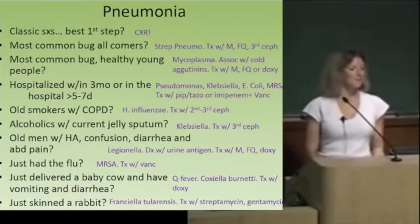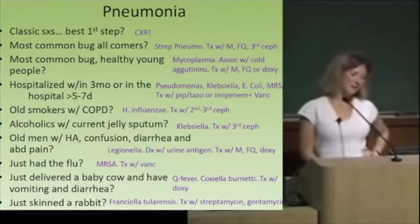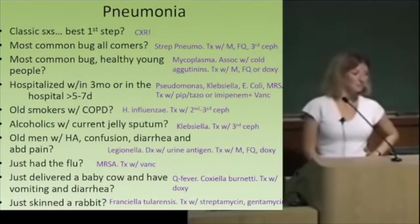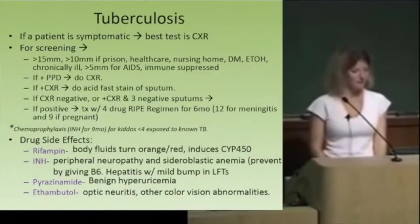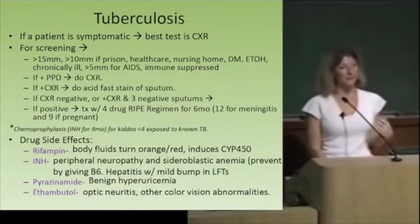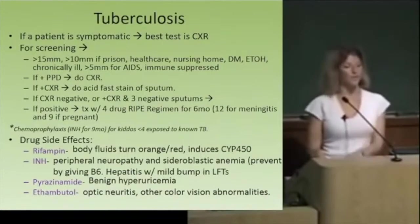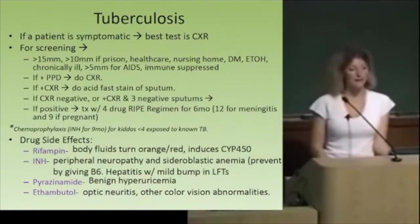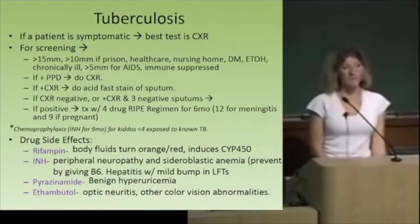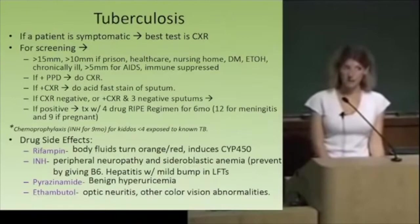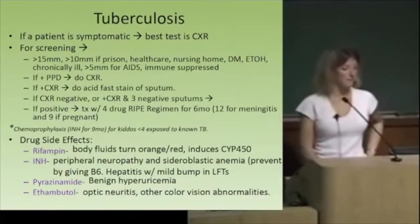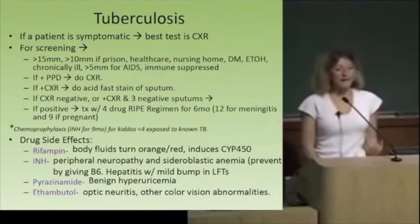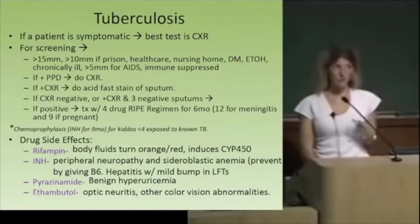For tuberculosis, if the patient has symptoms and you're really worried about TB, get a chest X-ray to see the lung involvement. For screening, we give the PPD with different thresholds for positive depending on risk level. If the PPD is positive, the next test is always a chest X-ray. If the chest X-ray is positive, get a sputum culture and acid-fast staining. If the chest X-ray is negative, it takes three negative sputum cultures to reassure us.